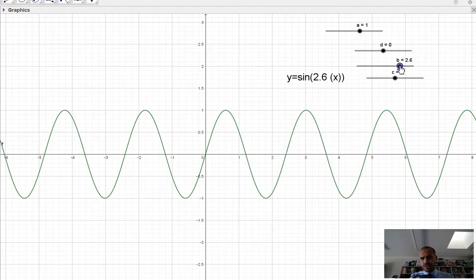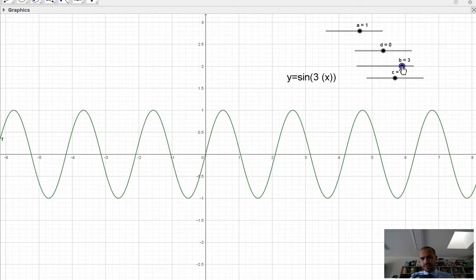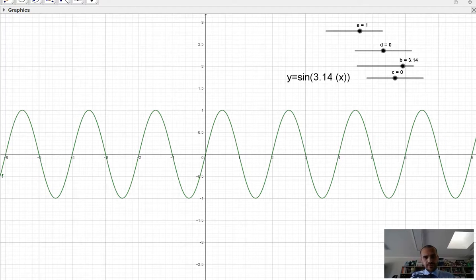I'm going to select a very specific b value for a number here. I'm going to choose the b value of 3.14. Now, a b value of 3.14, or actually a b value of pi, look at what it's done.